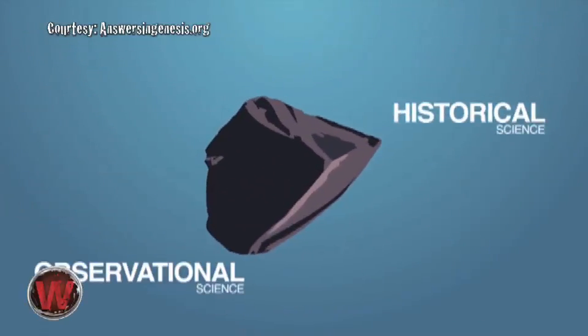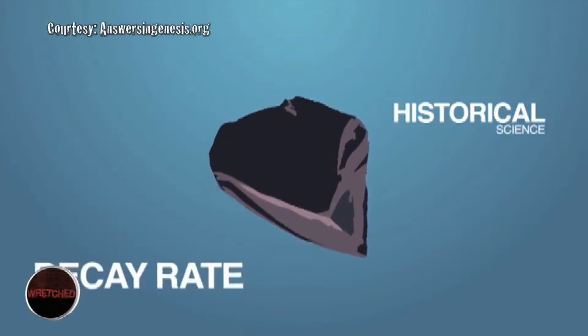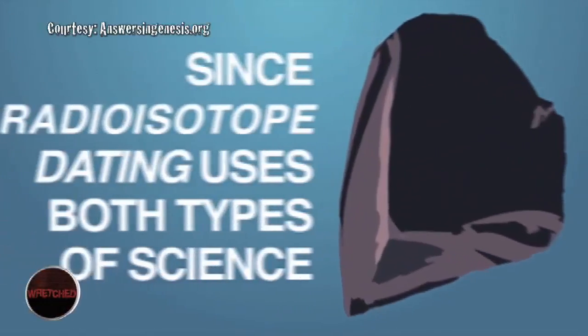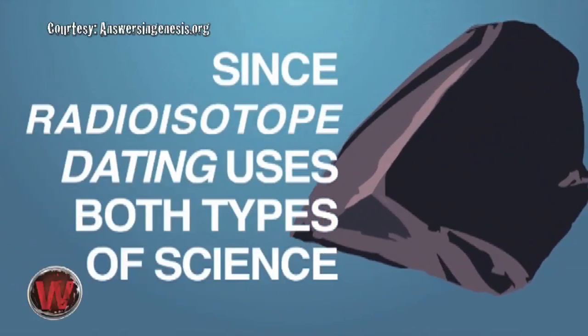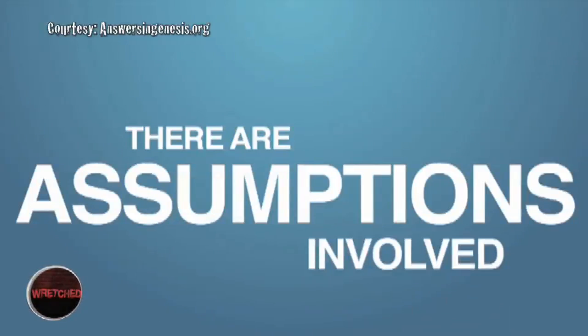Dating methods require both types of science, because in order to get accurate rock dates, one would have to accurately know both the decay rate and the initial conditions of the rock sample. Since radioisotope dating uses both types of science, we can't directly measure the ages of rocks. There are assumptions involved.